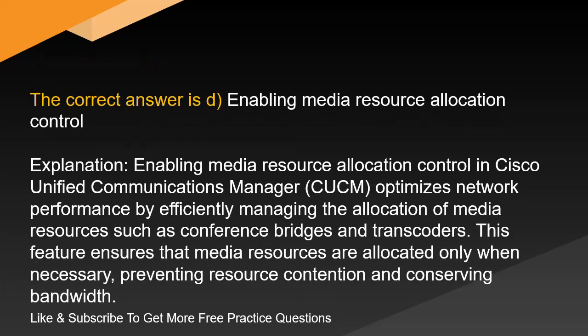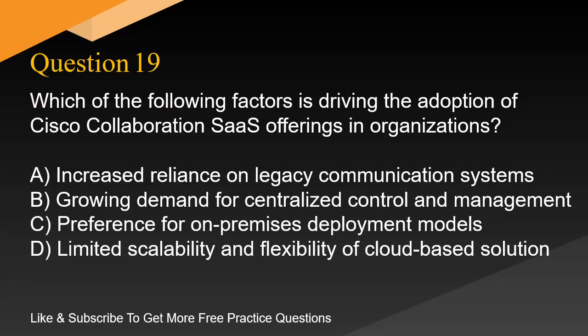Question 18. Which of the following actions can help optimize network performance for Cisco Unified Communications Manager (CUCM) in a SaaS deployment? A. Increasing the size of voice packet payloads. B. Disabling call admission control. C. Implementing call queuing for inbound calls. D. Enabling media resource allocation control. The correct answer is D. Enabling media resource allocation control. Enabling media resource allocation control in CUCM optimizes network performance by efficiently managing the allocation of media resources such as conference bridges and transcoders. This feature ensures that media resources are allocated only when necessary, preventing resource contention and conserving bandwidth.